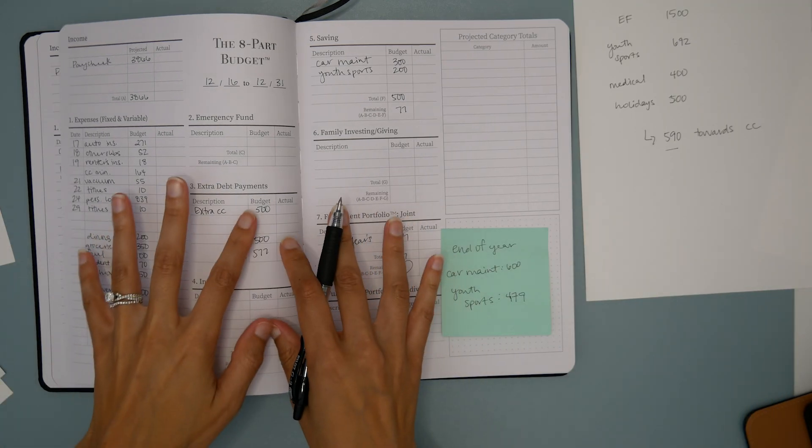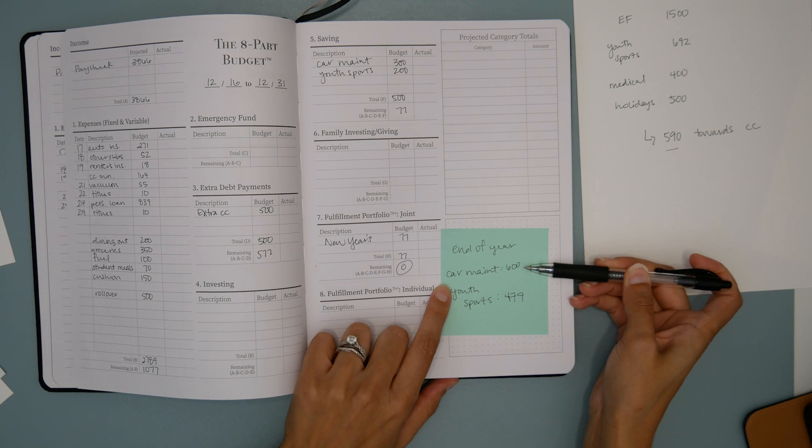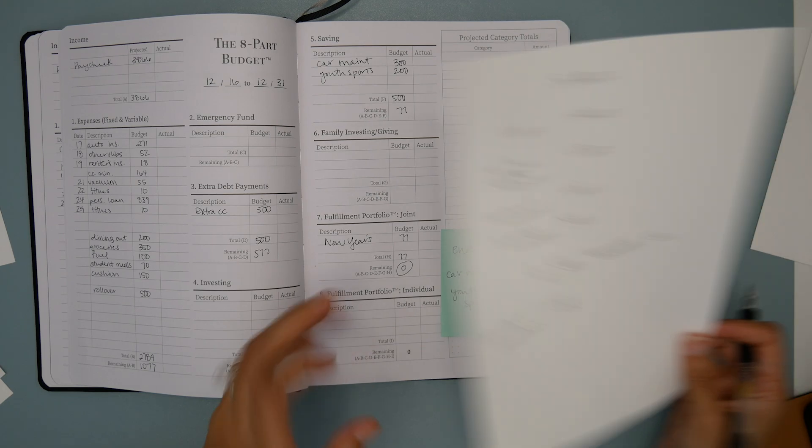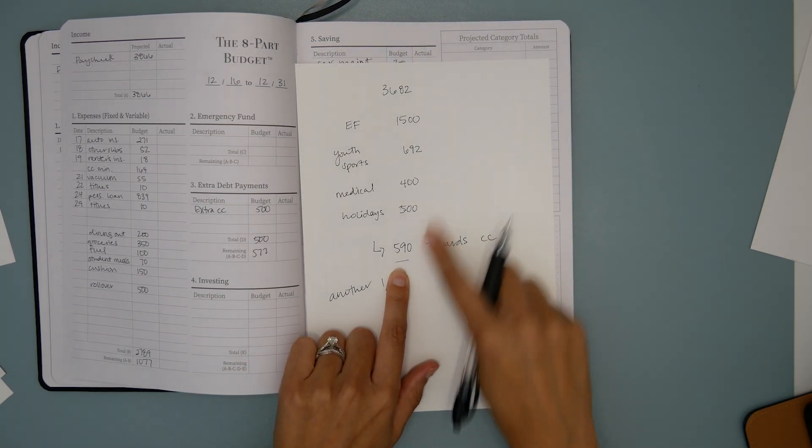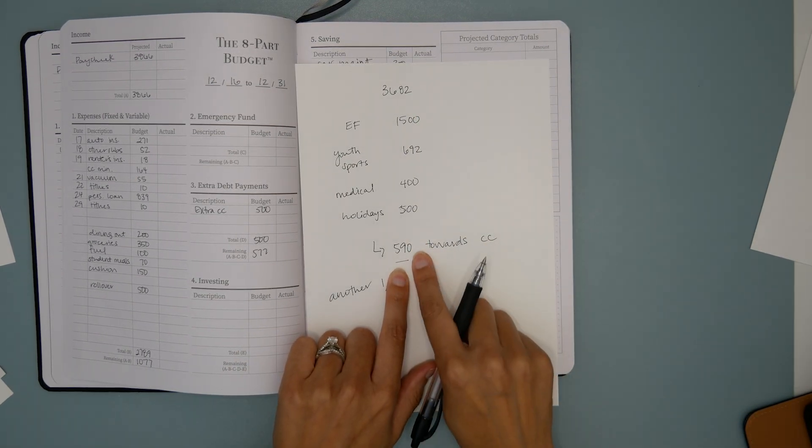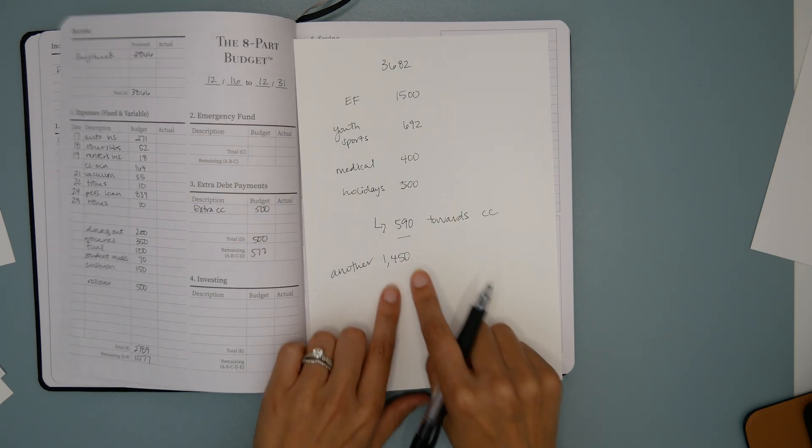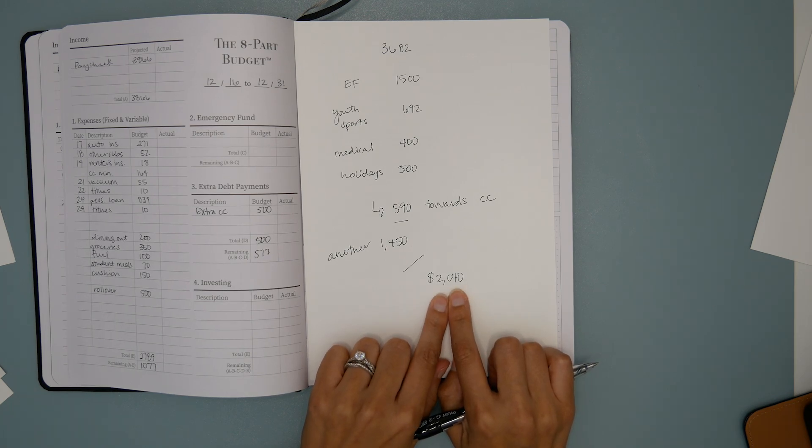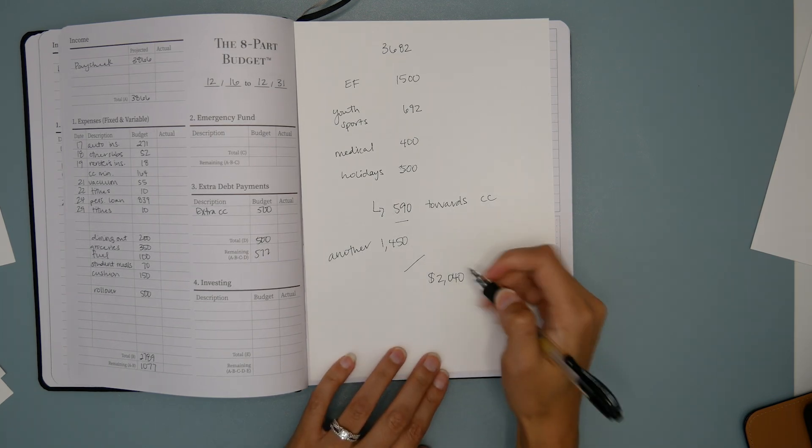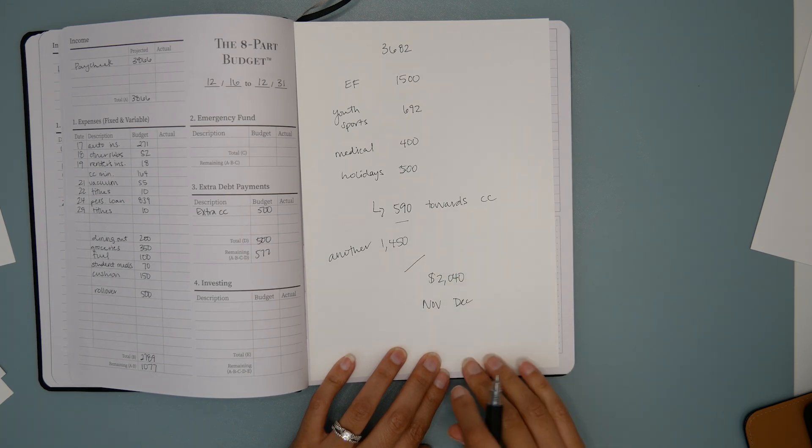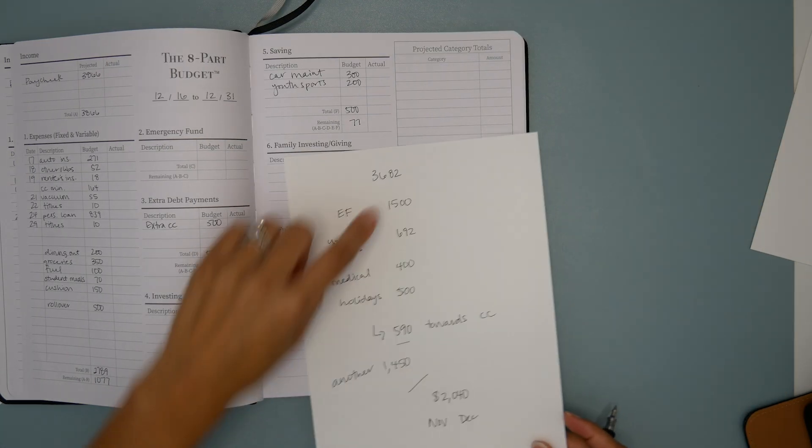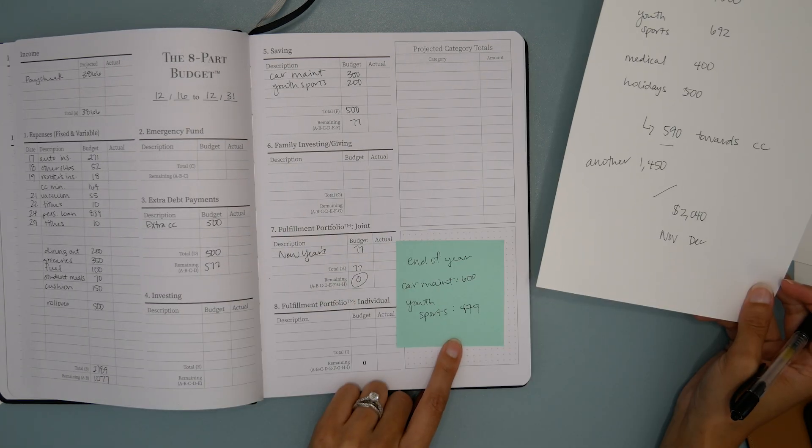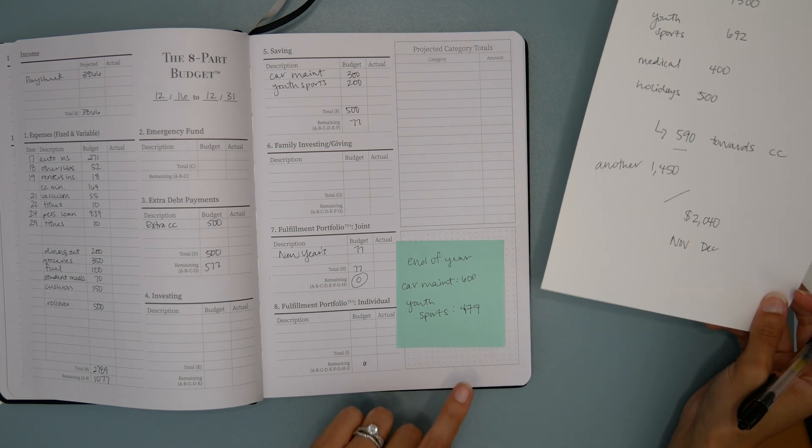So by year end, if she's able to stick to these budgets, she will have built her car maintenance savings bucket up to $600 and youth sports up to $479. And in terms of the credit card, she will have paid this $590 from her original savings as an extra payment. And then the other three budgets that I built for her, another $1450 would have gone towards the card. So altogether, $2,040 in extra credit card payments. So we've managed to slash that thing in half in November and December, while still making sure that she's got $1,500 set aside for emergencies, she was able to have a pretty nice holiday season and she's built up some savings.